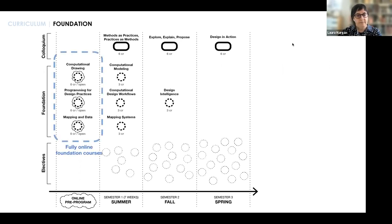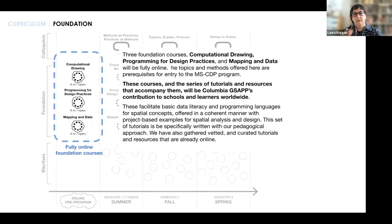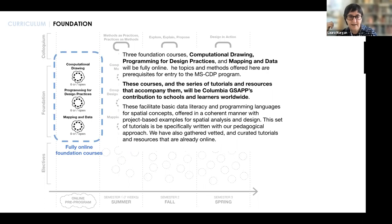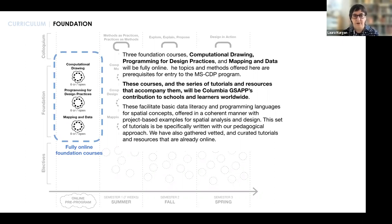Beginning with the three online classes — computational drawing, programming for design practices, and mapping and data — those are fully online but also part of a series of tutorials open to the whole of GSAP. They facilitate a basic data literacy and programming languages for spatial concepts, offered in a coherent manner with project-based examples for spatial analysis and design. Although you might know these from computer science or engineering, the examples we provide are always to do with the built environment.